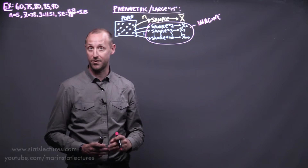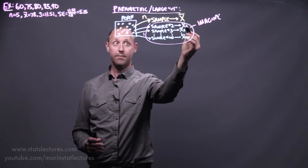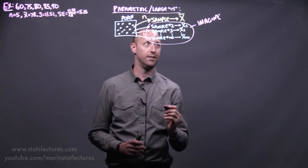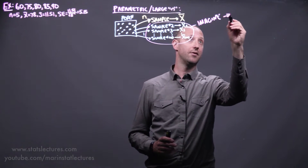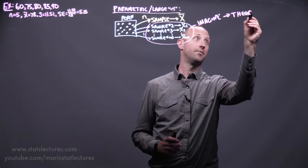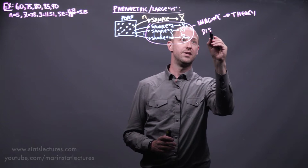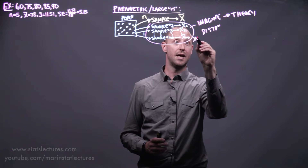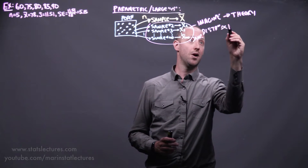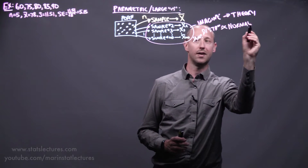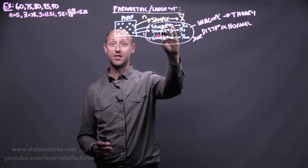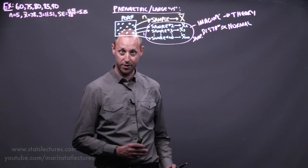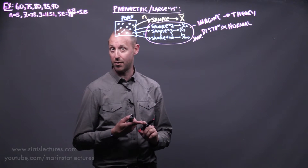Imagine if we were to take a sample of size n again from the population and get another estimate, then take another sample of size n and get another estimate — do this over and over again. We imagine doing this, and theory, large sample theory, tells us that the distribution of all these possible estimates — which we call the sampling distribution — is going to be approximately normal.